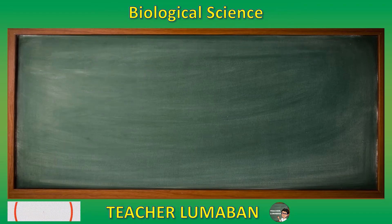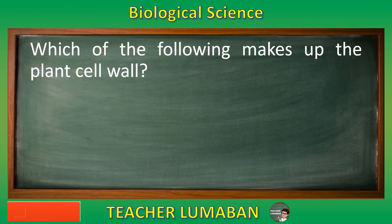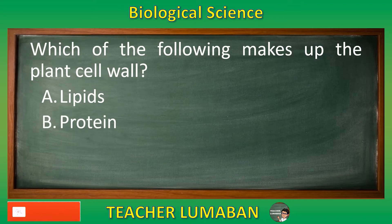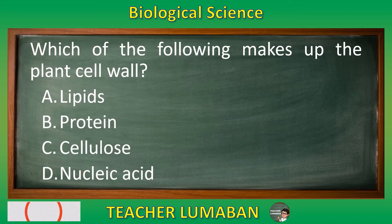Which of the following makes up the plant cell wall? Letter A: Lipids. Letter B: Protein. Letter C: Cellulose. Letter D: Nucleic Acid.